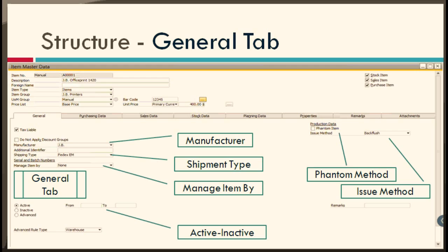Going down to issue method, you select one of the following: Back Flush or Manual. Back Flush means that after reporting the completion of a parent item, the components are automatically issued to the production order. This is useful when manufacturing PC sets where small items like nuts and bolts are needed in bulk. With Manual, components are manually issued to the production order regardless.